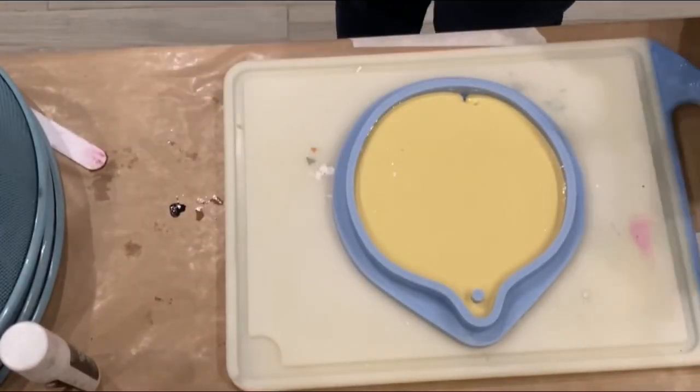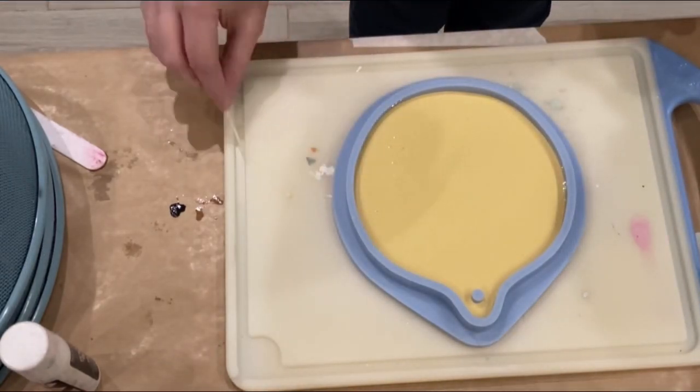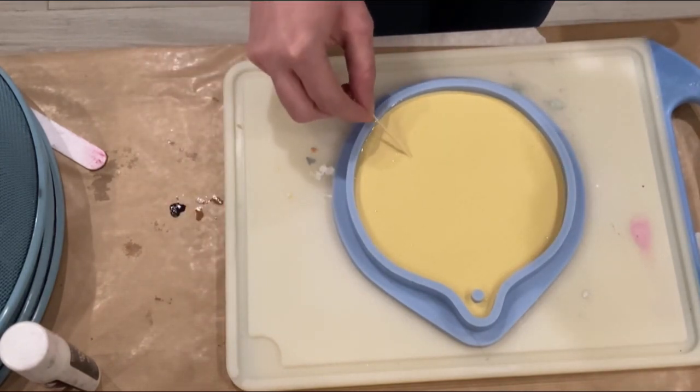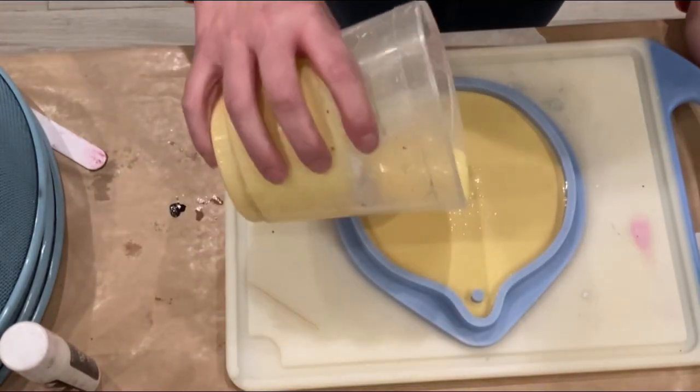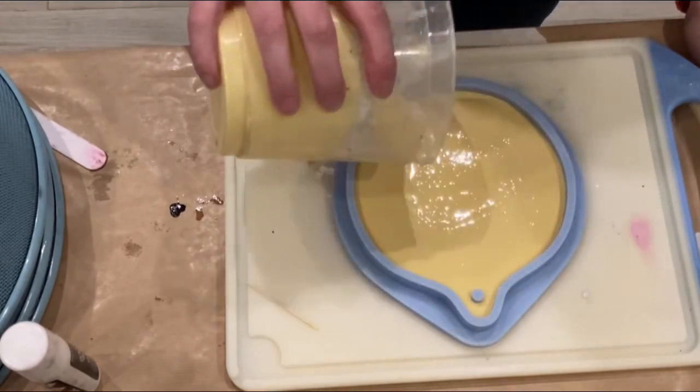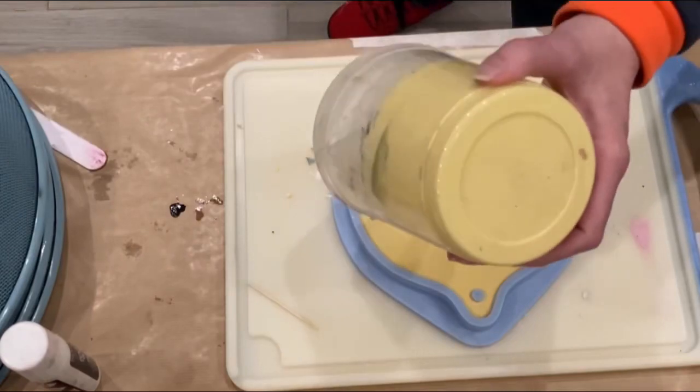Now I'm putting my Jesmonite into my mold. And yeah, I'm tapping a little bit. I hope the camera is not shaking too much. There was something in my Jesmonite so I took it out. I keep on pouring. So I think this color is already quite nice, this sort of yellowish color.